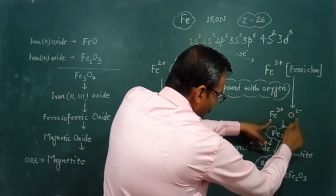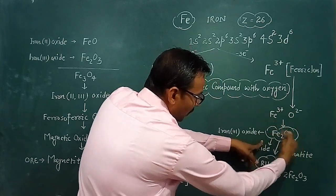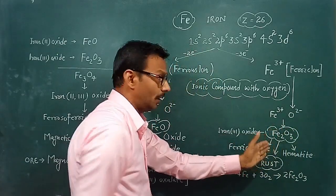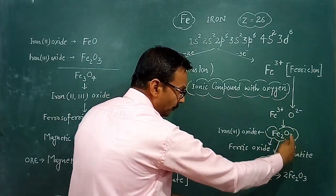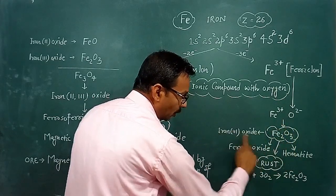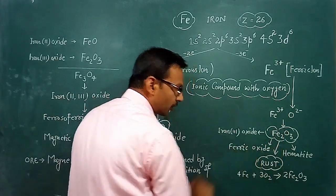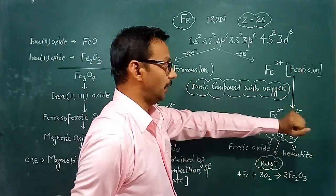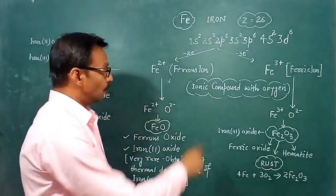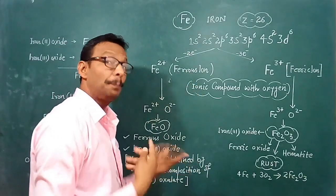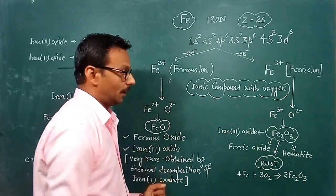Fe2O3 is another ionic compound formed by the combination of metals and non-metals through charge exchange. This compound is called iron(III) oxide, or ferric oxide, because the valence is 3. The naming convention uses 'ferrous' for the lower valence and 'ferric' for the higher valence, similar to cuprous and cupric.